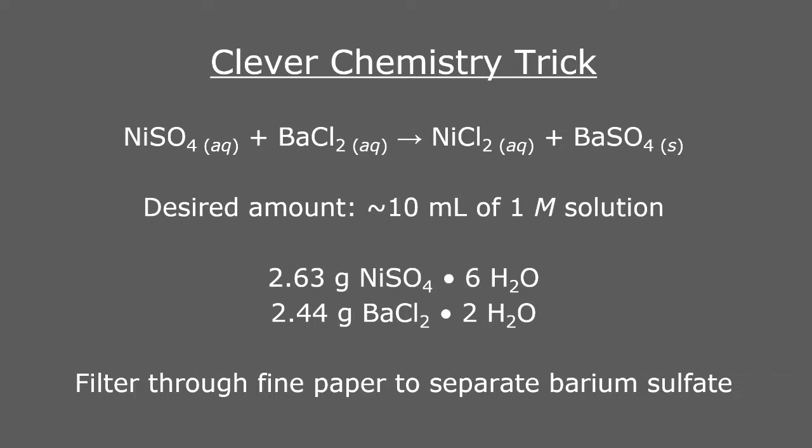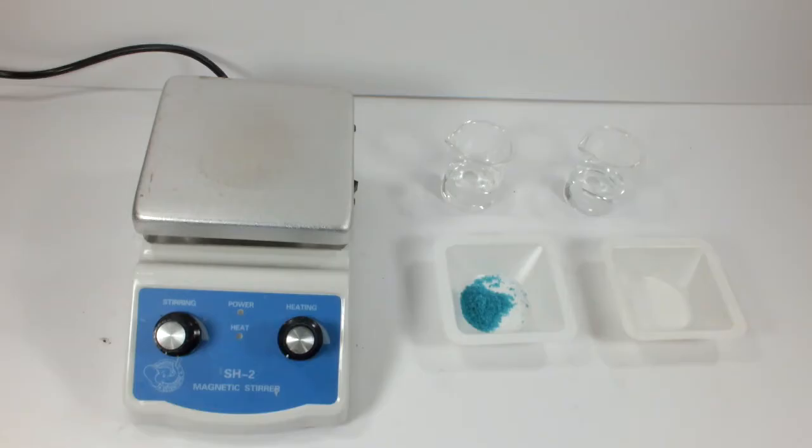So if I were to calculate a perfectly stoichiometric ratio, I should have an almost quantitative yield of barium sulfate precipitate and a usable solution of nickel chloride.